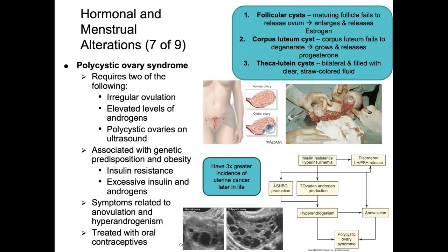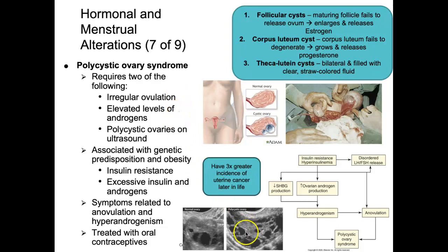PCOS — polycystic ovary syndrome — is one of the most common endocrine disturbances affecting women and the leading cause of infertility in the U.S. Diagnosis requires at least two of the following: irregular ovulation, elevated levels of androgens, or polycystic ovaries on ultrasound. On ultrasound, a polycystic ovary shows many fluid-filled cavities, though this finding alone is not sufficient for diagnosis without evaluating the other criteria.